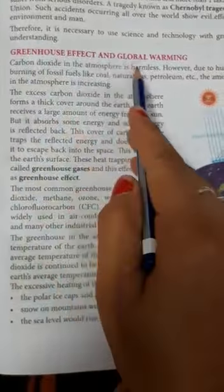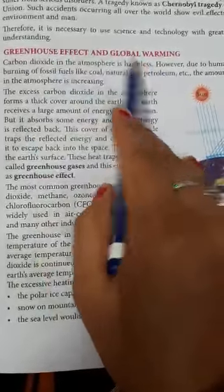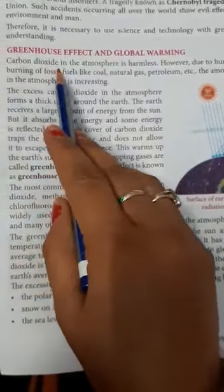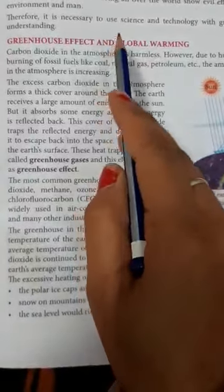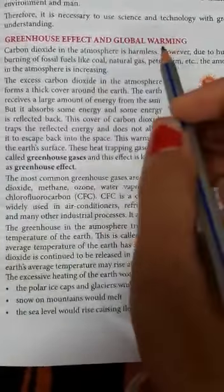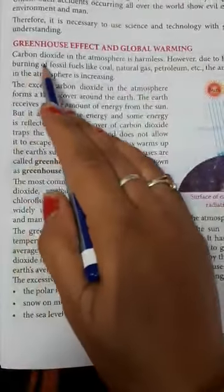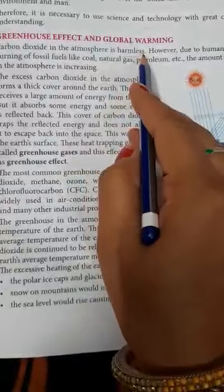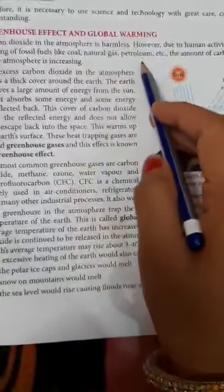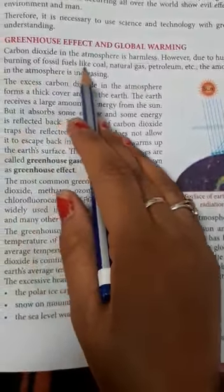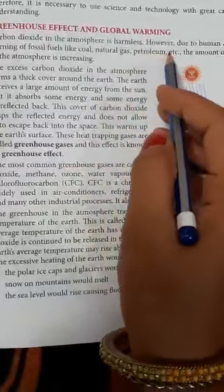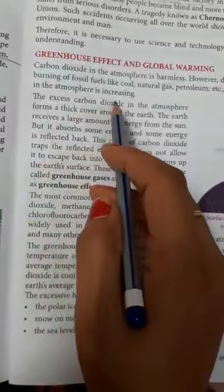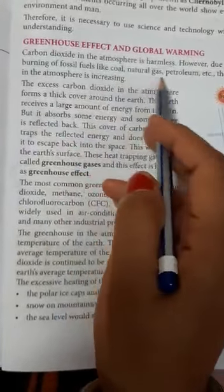Next is the greenhouse effect and global warming — this is a very important topic. Carbon dioxide in the atmosphere is normally harmless; along with oxygen, CO2 is present in the air but is not harmful by itself. However, due to human activities such as burning of fossil fuels like coal, natural gas, and petroleum, the amount of carbon dioxide in the atmosphere is increasing.